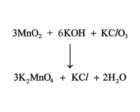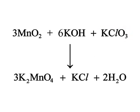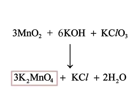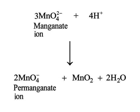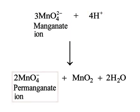Potassium manganate is also formed when manganese dioxide reacts with potassium hydroxide and potassium chlorate. The potassium manganate formed is then converted to potassium permanganate by electrolytic oxidation in alkaline solution. When thus formed, potassium permanganate is allowed to stand for some time, it undergoes disproportionation in neutral and acidic solution. In this reaction, manganate ions react with hydrogen ions to form permanganate ions, manganese dioxide and water.